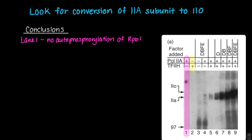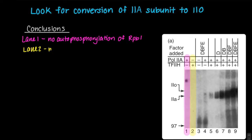For the second lane highlighted in yellow, only TF2H was added. Since RNA polymerase 2A was not added, we should not expect there to be a band around 200 kilodaltons. We can see that this is indeed the case.